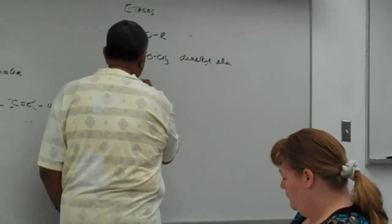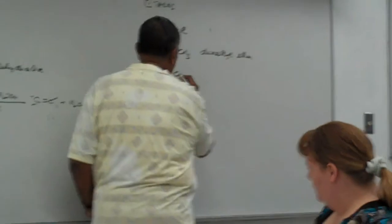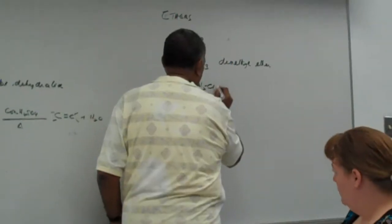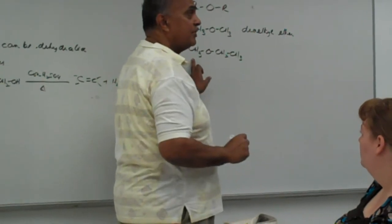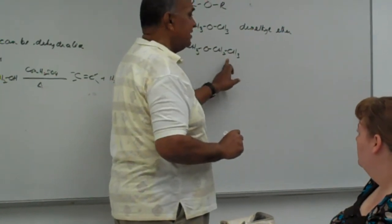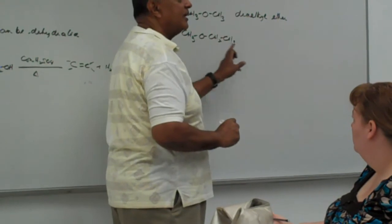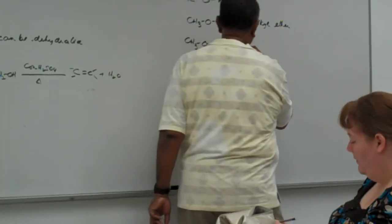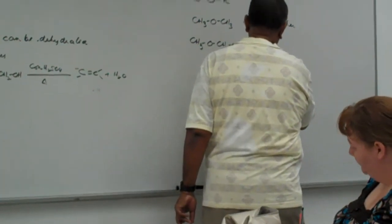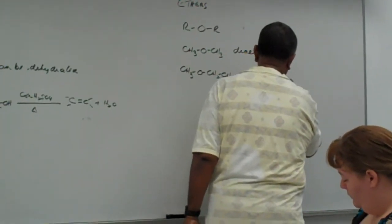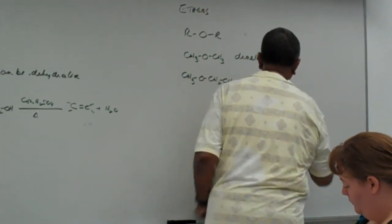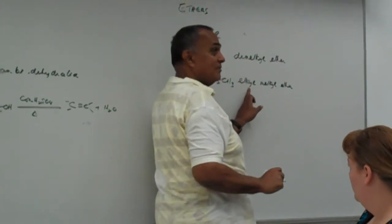If we have one that's not symmetrical, like this, where one of the R groups is CH3 and one is ethyl, we say methyl ethyl ether. And kindly note, we list E before M.